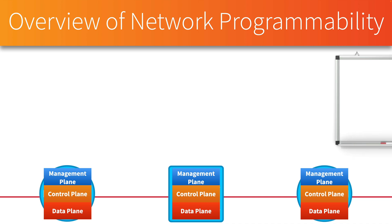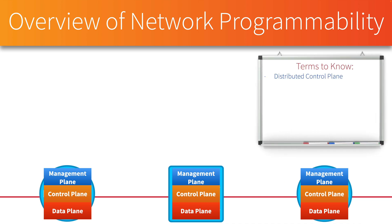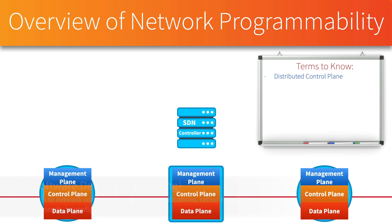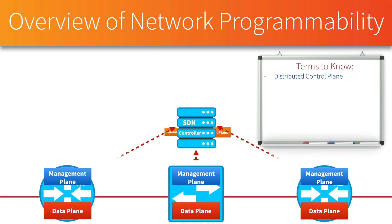There are several terms I want you to know. The first is a distributed control plane — that's what we have traditionally, meaning the control plane is distributed across devices where every device has its own control plane. However, as we start to migrate towards network programmability, we might instead have an SDN controller — a software-defined networking controller. In some SDN controllers, we can take the control planes from our network devices and have those control planes run on the controller, so the controller is in charge of running those algorithms.